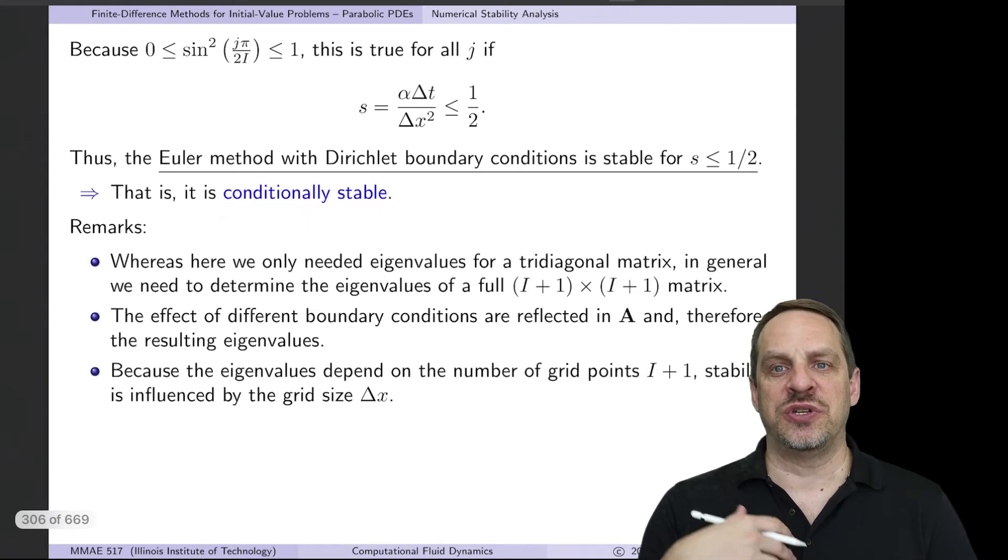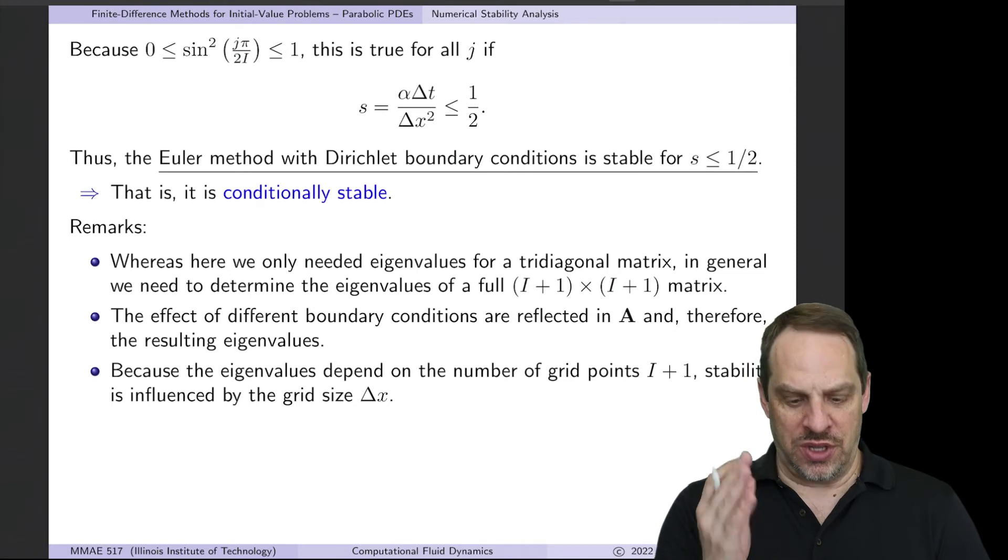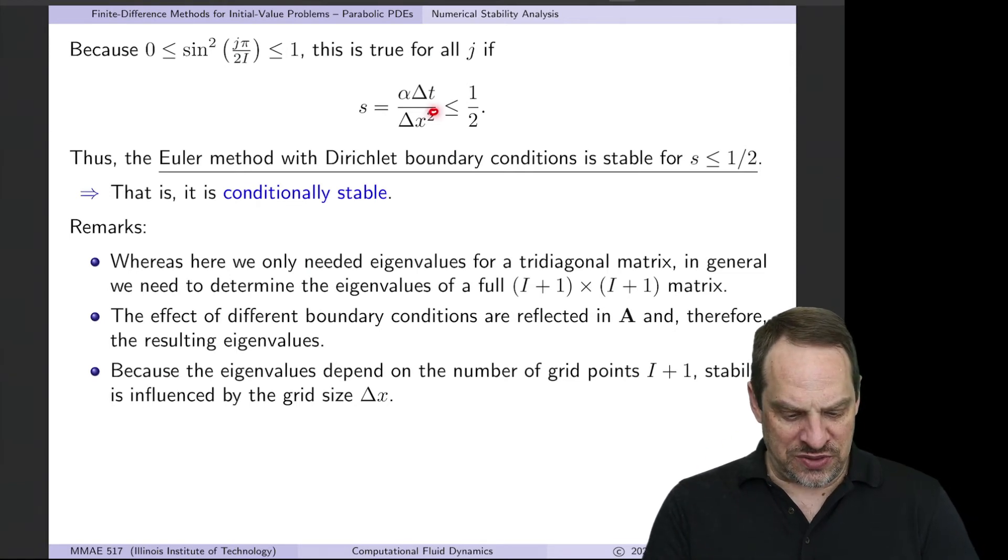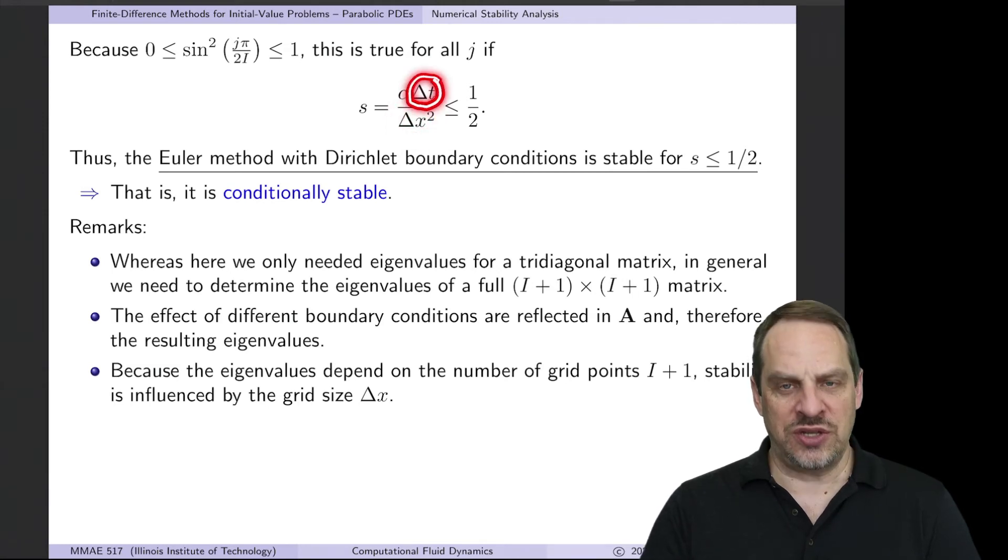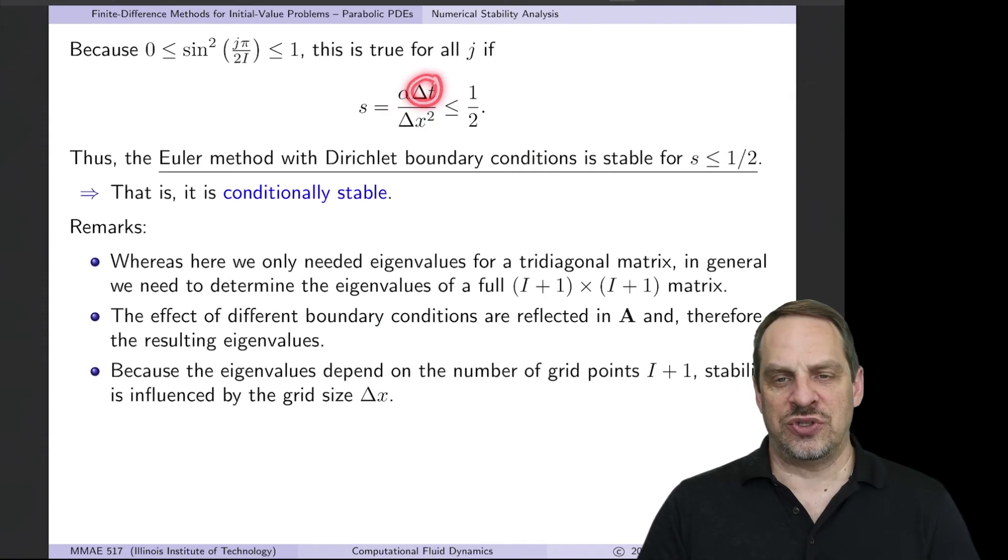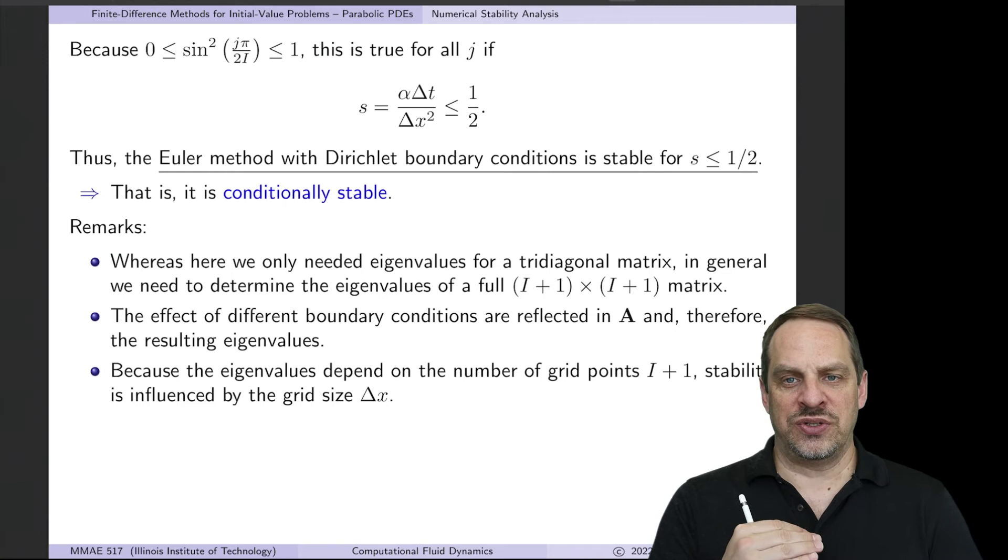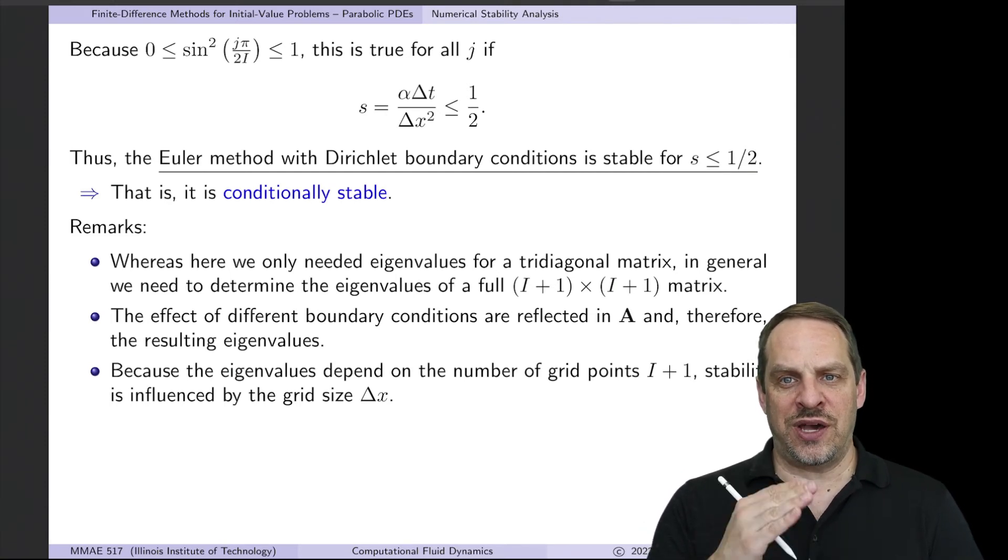So the s, which is alpha delta t over delta x squared, has to be less than or equal to a half for the Euler method with Dirichlet boundary conditions applied to the 1D unsteady diffusion equation. So it is conditionally stable. There are only certain conditions for which it's stable. There's other conditions for which it's unstable. And remember what that effectively means is once we choose our spatial grid size, the delta x, this effectively gives us a limitation on what the time step can be. Remember the alpha is pretty small. The delta x, of course, is small. You square that, it gets even smaller. So this was a restriction on delta t. And normally the restriction on delta t for stability is more restrictive than the restriction on delta t for numerical accuracy, as we discussed in the previous video. We will want to be able to address how can we improve on these methods in terms of their numerical stability properties.